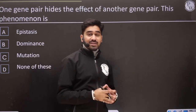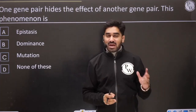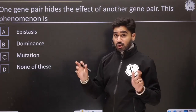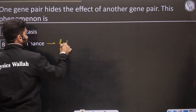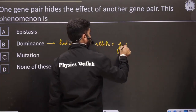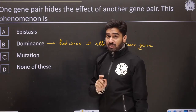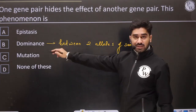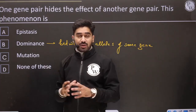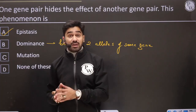One gene pair hides the effect of another gene pair — even though this is not in NCERT. As I mentioned earlier in smart study: dominance was between two alleles of the same gene, not between two different gene pairs. Mutation means genetic change, so that's not it. One gene hiding another is epistasis — the presence of one gene prevents another from functioning.